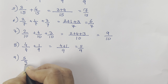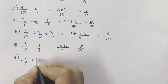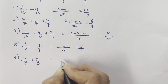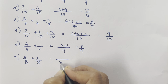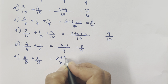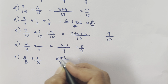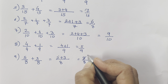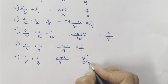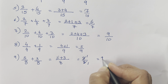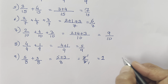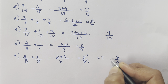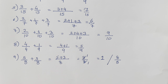Then 5 upon 8 plus 3 upon 8. Denominator is 8. 5 plus 3 is 8, and the denominator is also 8. So 8 upon 8 equals 1. You can keep it as 8 upon 8 or write it as 1 — both answers are the same.